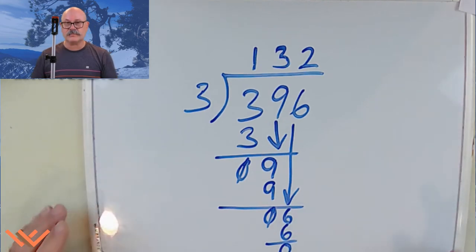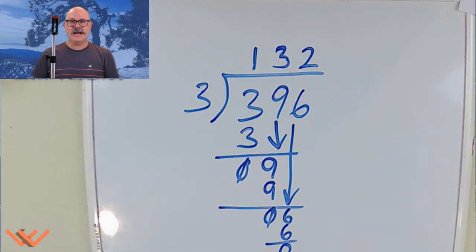So my quotient is 132. And this zeroes out. Boom. We just finished a single digit divisor division problem. Long division problem, in fact. Let's take a look at another one real quick.